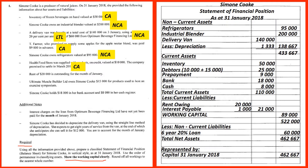Rent of 20,000 is outstanding — that is a current liability. Ultimate Muscle Builder Limited owes Simone Cook 15,000 for products used to host an exercise symposium — that's another debtor and current asset. Simone Cook holds 18,000 in cash in bank — that is also a current asset.